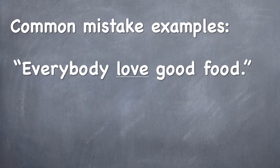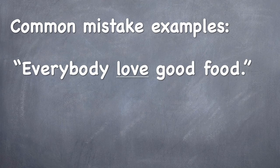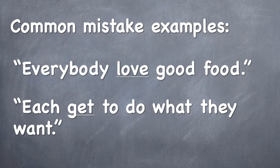Everybody love good food. In this sentence the verb love is plural and that's wrong because it refers to the subject everybody which is singular. Check out this sentence: Each get to do what they want. This one actually has two problems. The verb get is plural and the pronoun they is also plural. And the problem is that the subject each is singular.